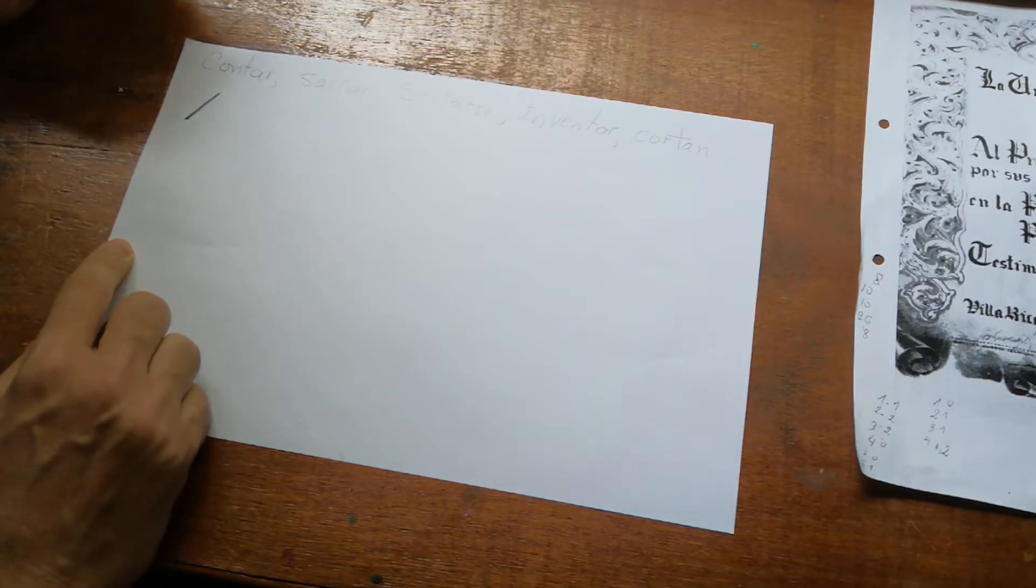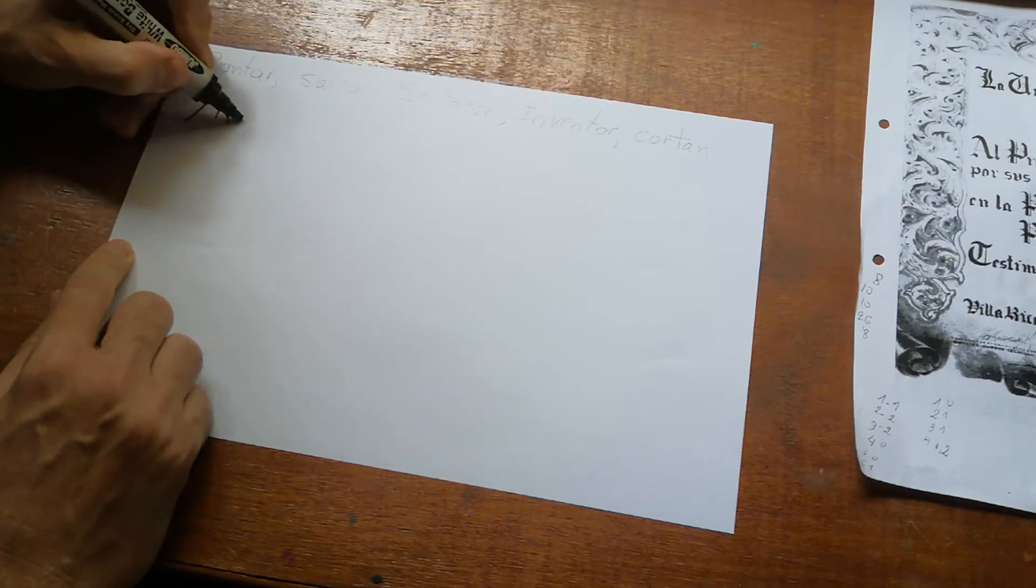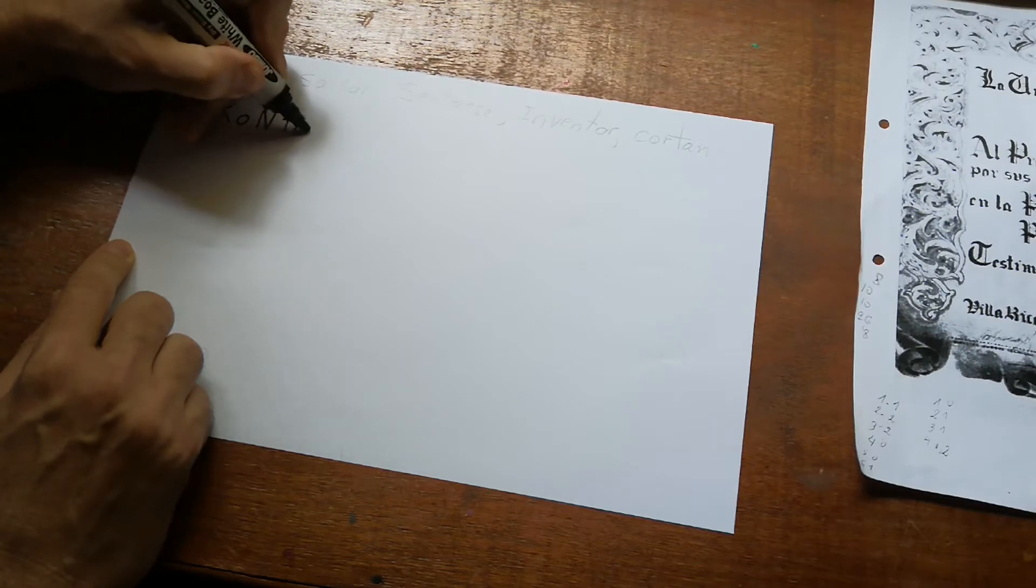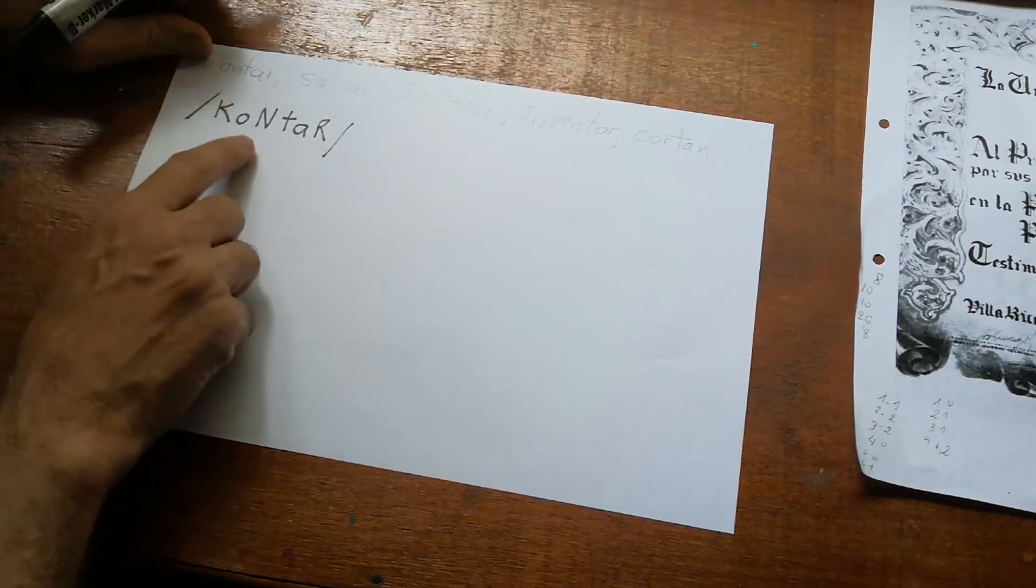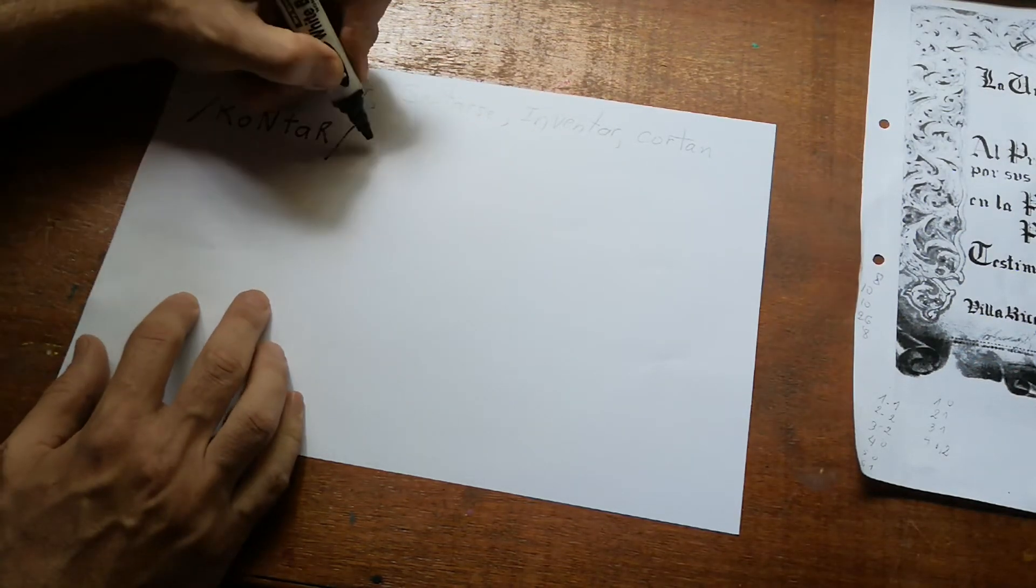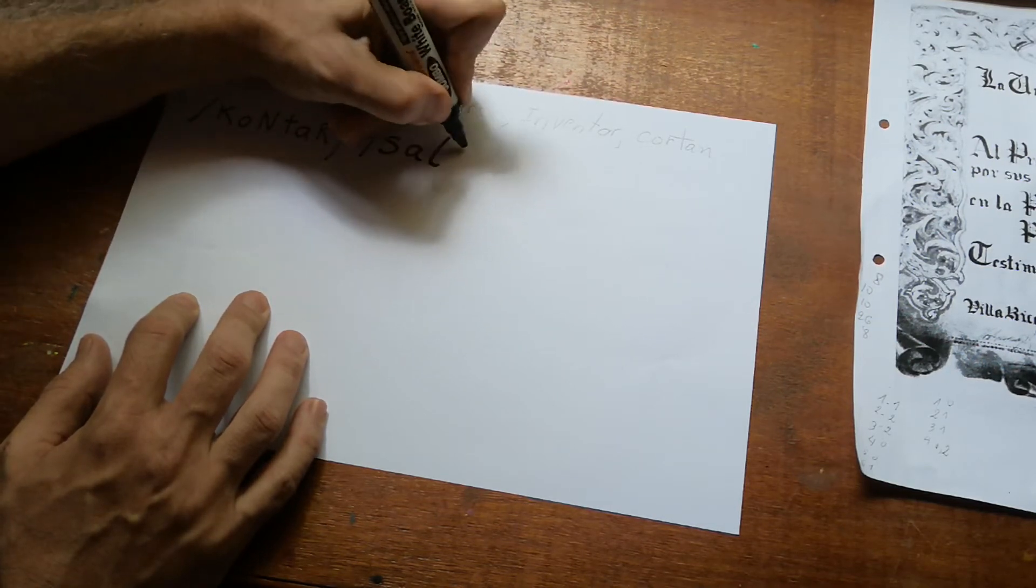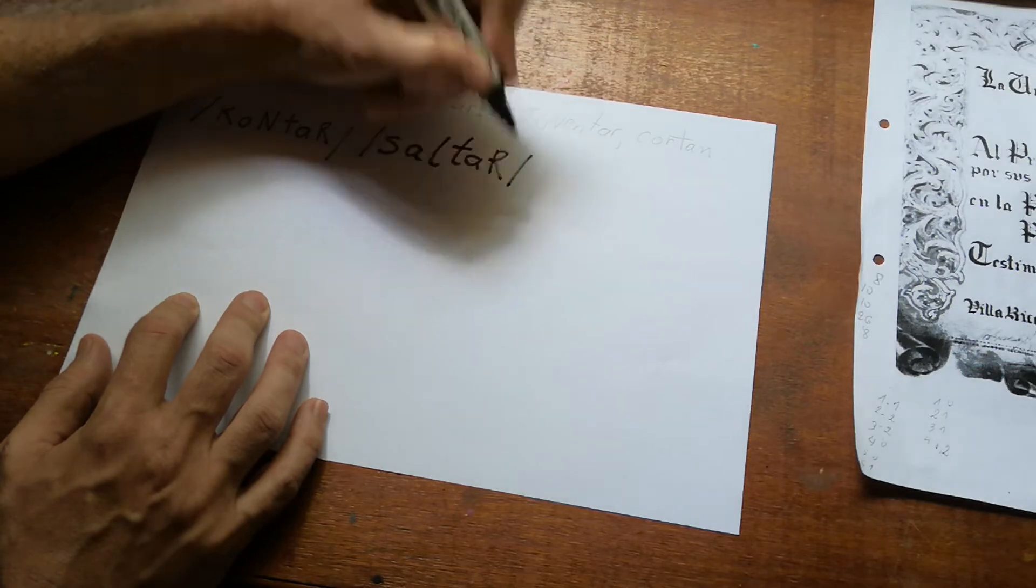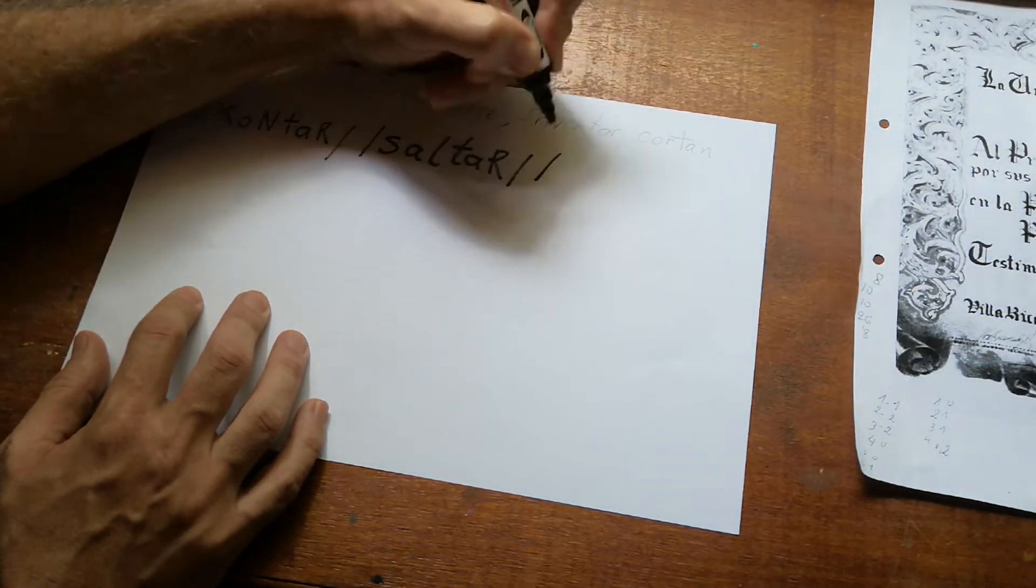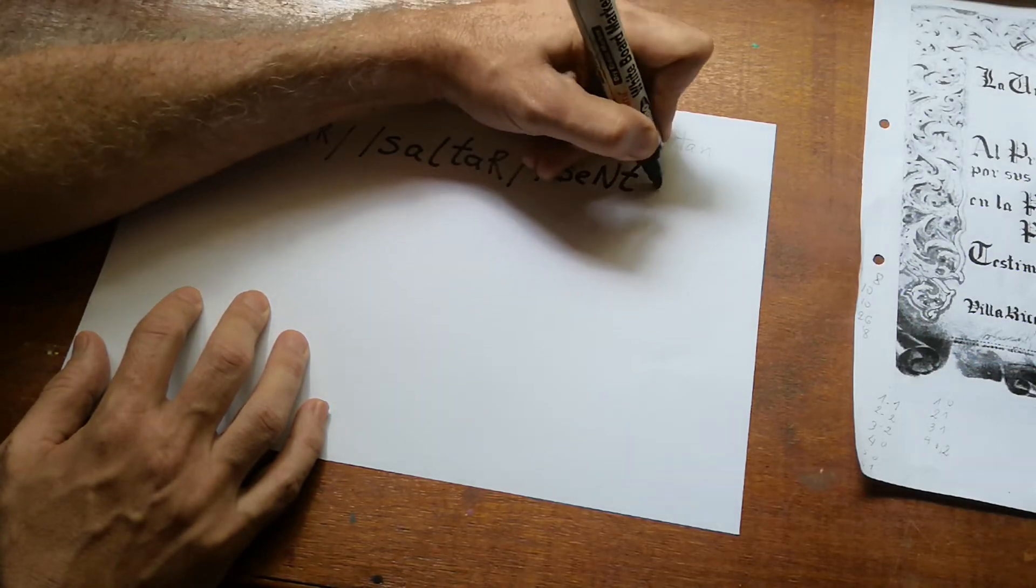Contar is the first one, so we write... these two are the archiphonemes. Then we have saltar, so we write that, and then we have sentarse. I don't know why I'm speaking in English.